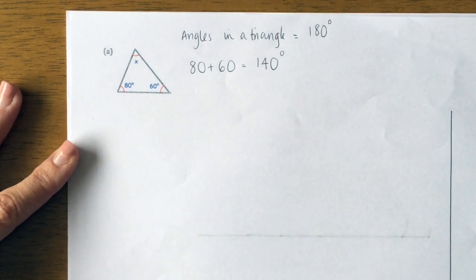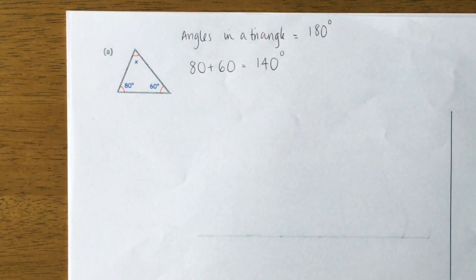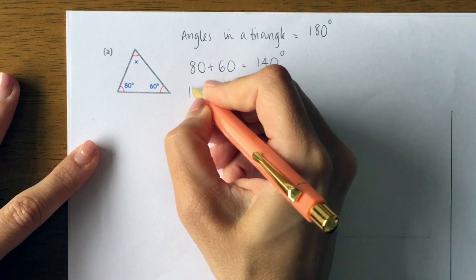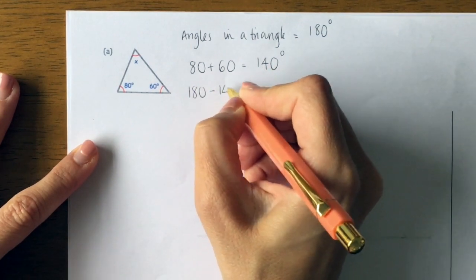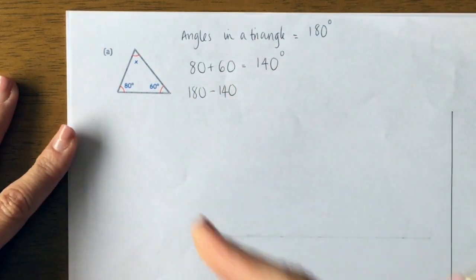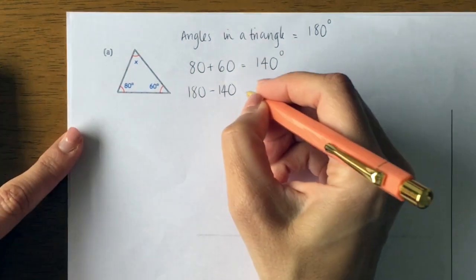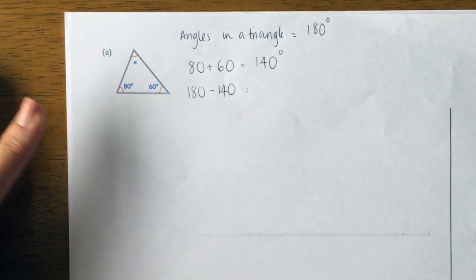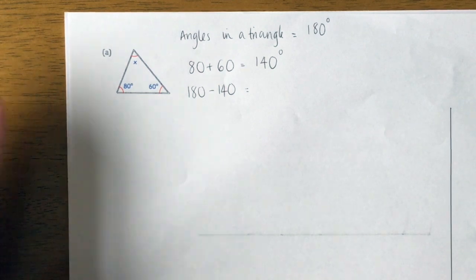The next stage is to do your takeaway. We take it away from 180 to find out what's missing. On the last video I showed you counting up from 140 to 180, so I'm gonna do that again instead of doing a takeaway where we might have to borrow or we're not sure what to do.